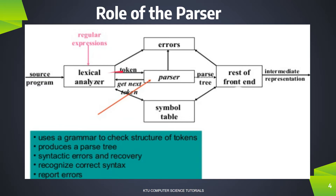We have to choose the parser to get the next token. The second phase is to identify the parser. The parser gets the next token and we proceed with this process until the end of the source program. This is the task of the parsing process.